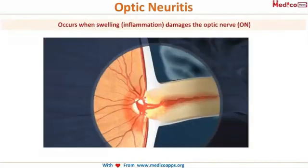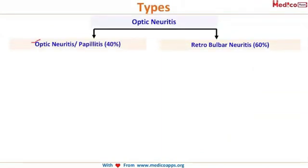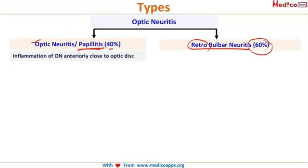As the name suggests, optic neuritis is an inflammation of the optic nerve accompanied by disc edema. It is broadly divided into two types: optic neuritis proper or papillitis, seen in about 40% of cases, and retrobulbar neuritis, which accounts for 60% of cases. In papillitis, the inflammation is anterior, close to the optic disc, whereas in retrobulbar neuritis it is present posteriorly, behind the eyeball.